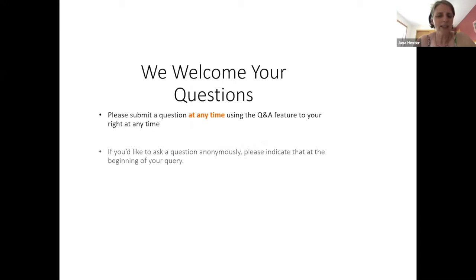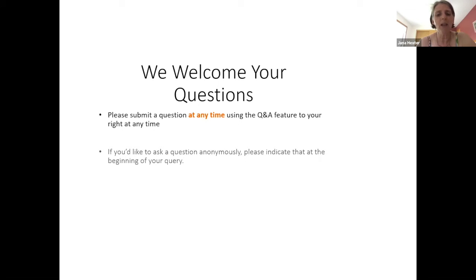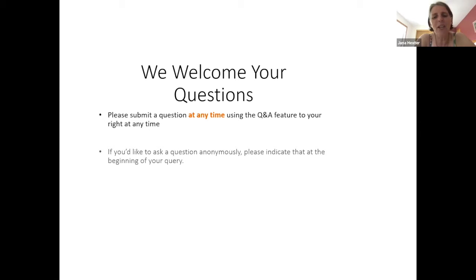For questions, we're not going to use the chat feature because it's too complicated to keep track of with lots of people. We use the Q&A feature. If you scroll your mouse over the Zoom box, a bar appears at the top or bottom — look for two rectangles together labeled Q&A. You can ask a question and make it anonymous if you prefer. We'll sort through questions as Ali is presenting, and if three people ask the same question, we'll make sure to address it.